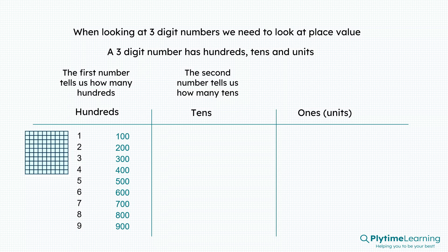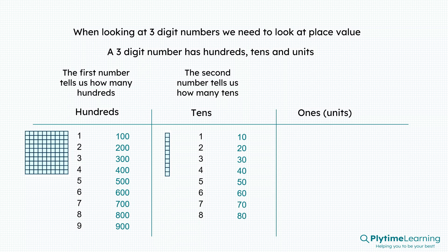The second number tells us how many tens there are. This is a 10. We might have 1 which is 10, 2 which is 20, 3 which is 30, and so on up to 9 which is 90.